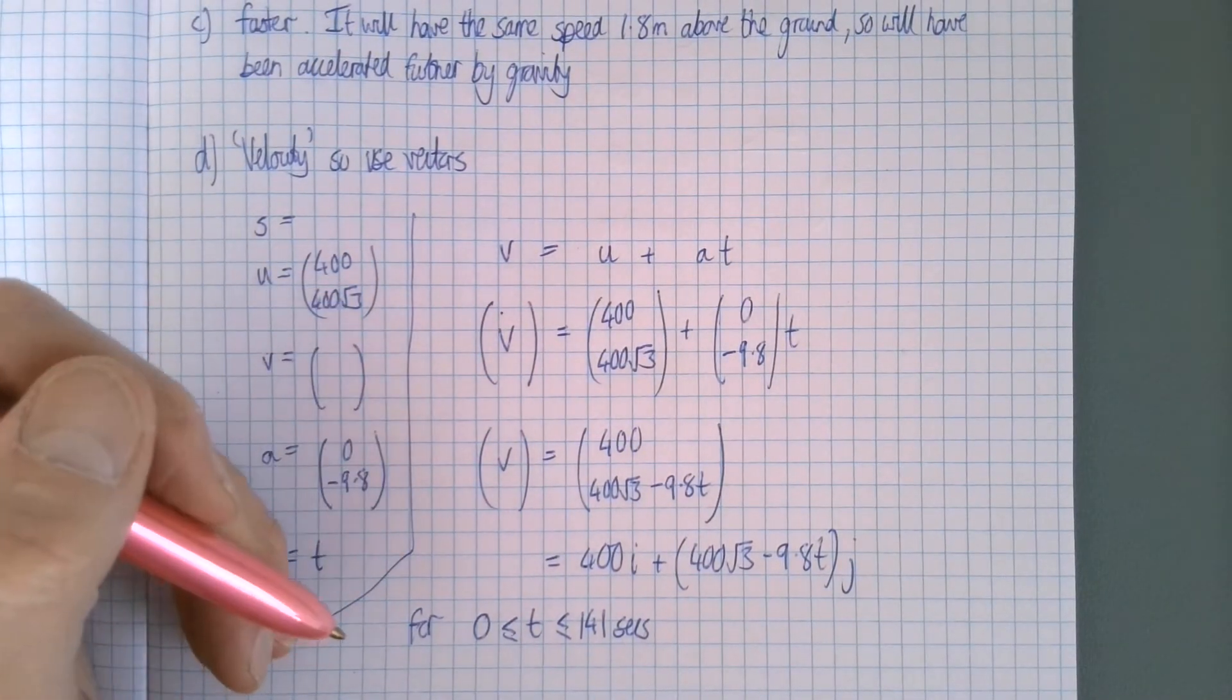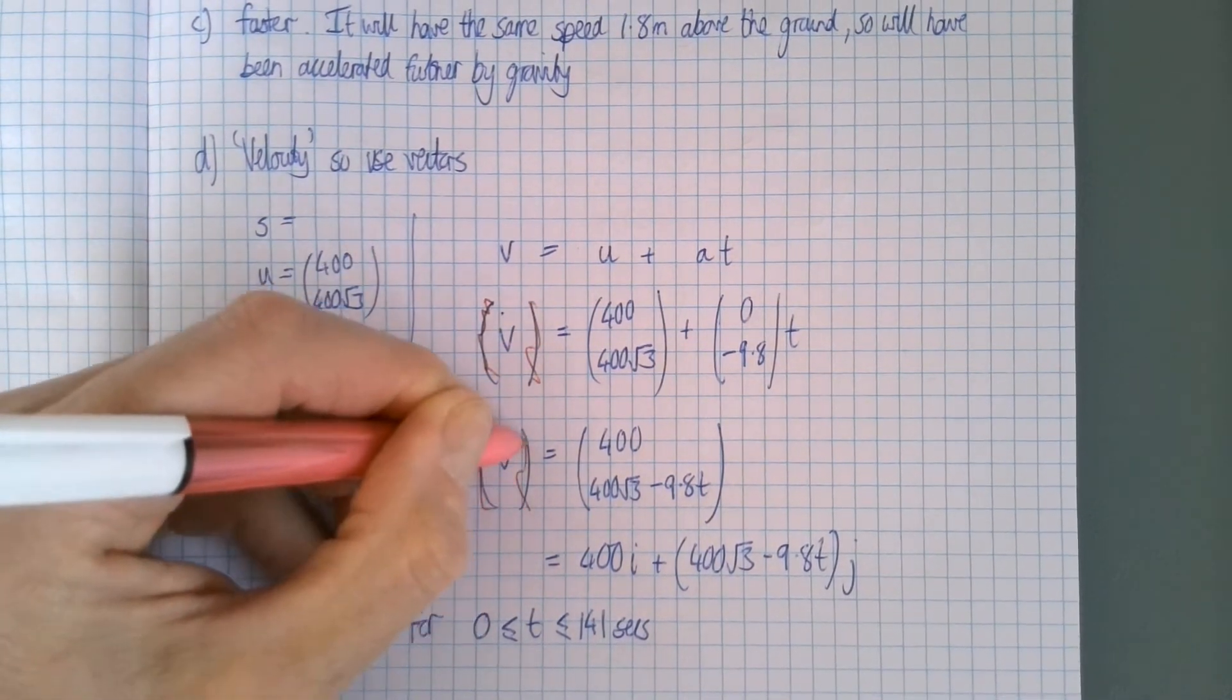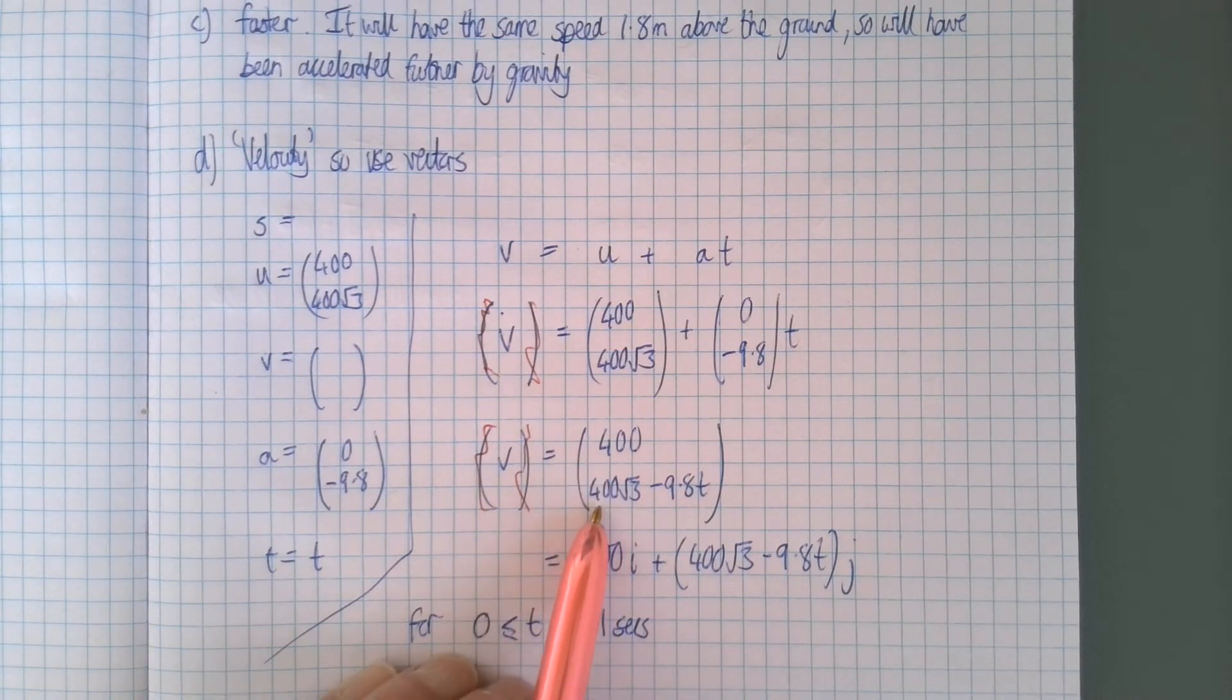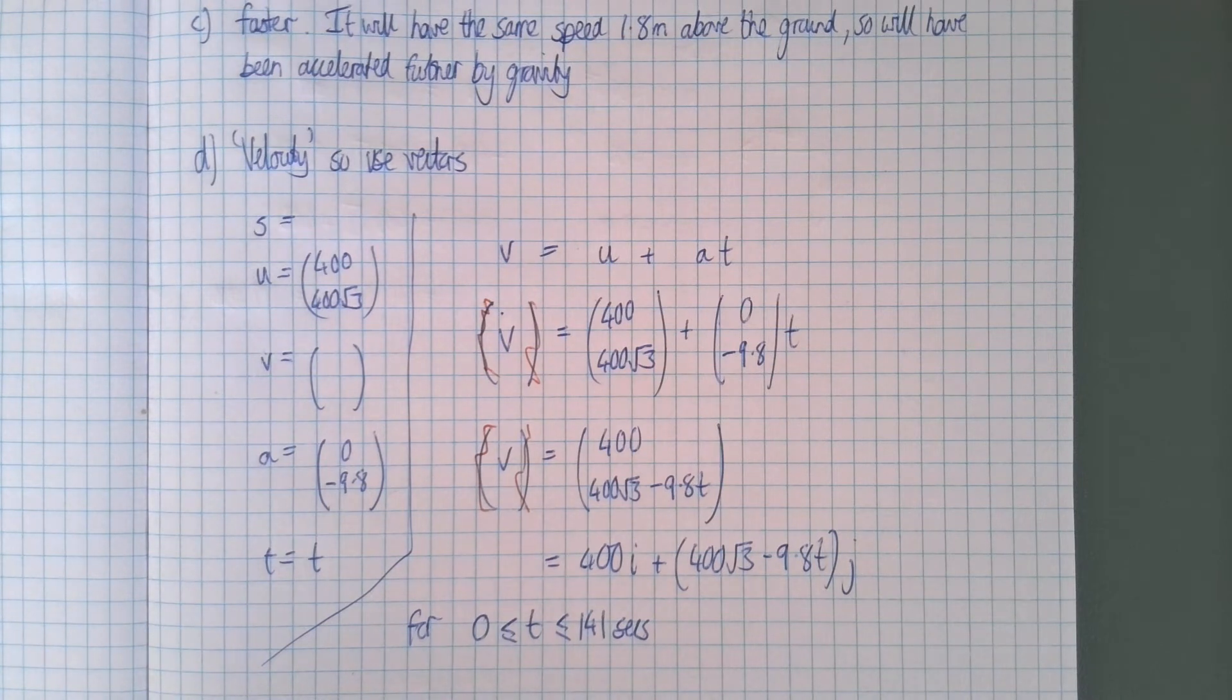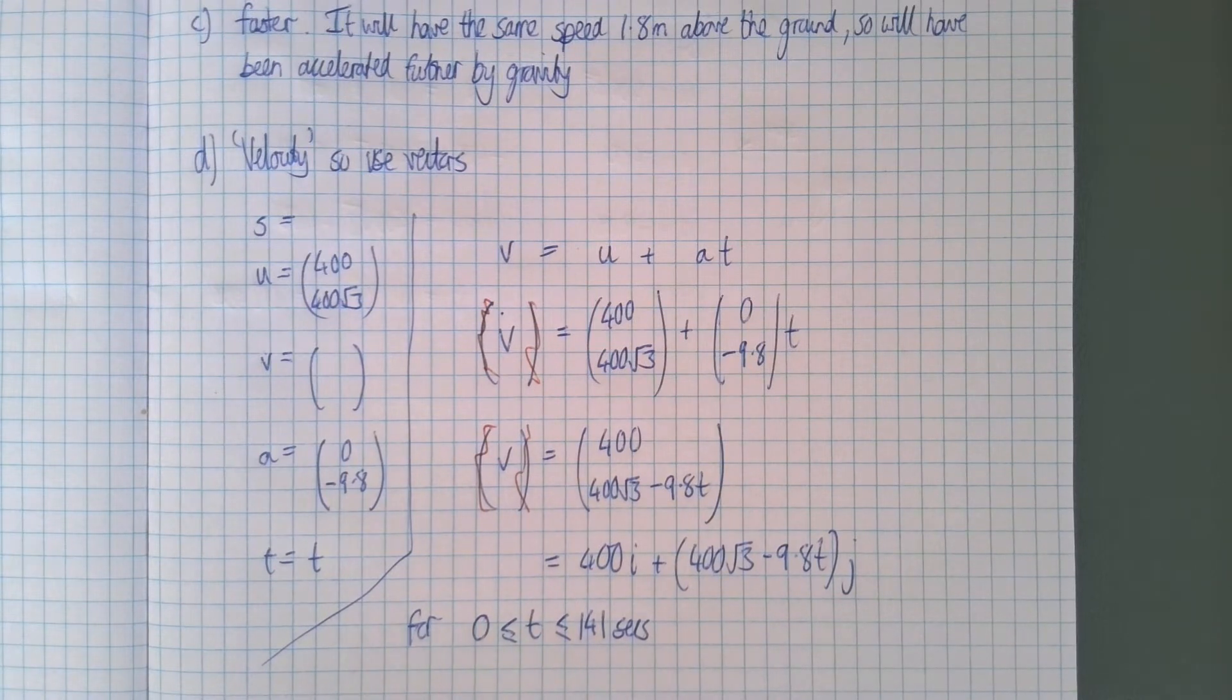I think this is actually a bit clunky, I might have just left it as v like that rather than putting the brackets, but anyway that's my final answer in unit vector form. And the constraints, well of course this only works until it hits the ground. So that was the answer to the previous question, that was the range of values for which the model was valid.